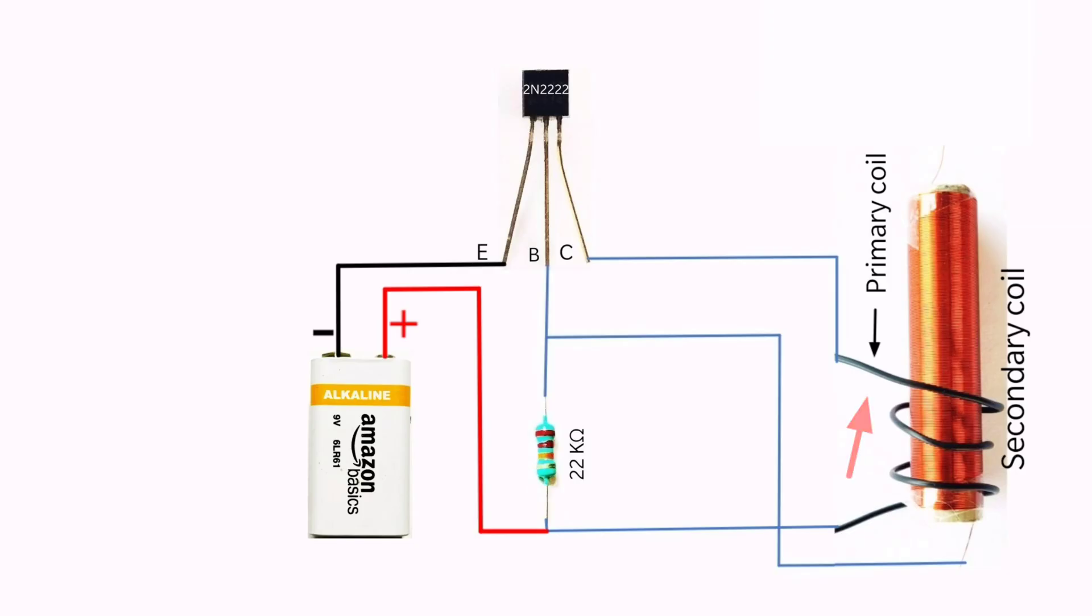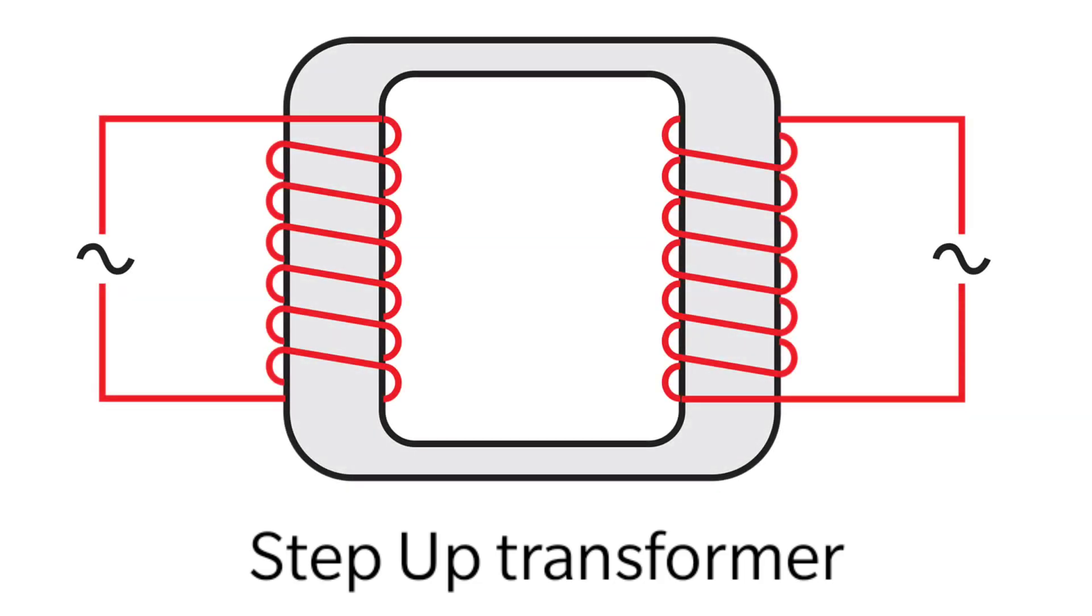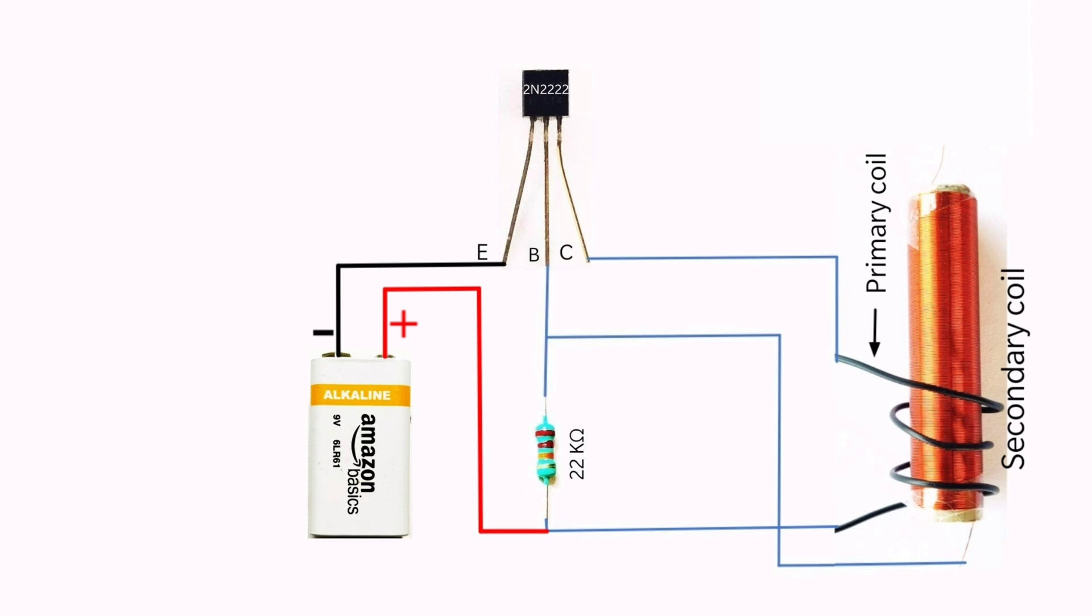The primary coil is charged with a DC power source and when it reaches its maximum voltage, it sends the voltage to the secondary coil. Here you can imagine the working of a step up transformer, and the secondary coil generates a high enough voltage to illuminate a light bulb.